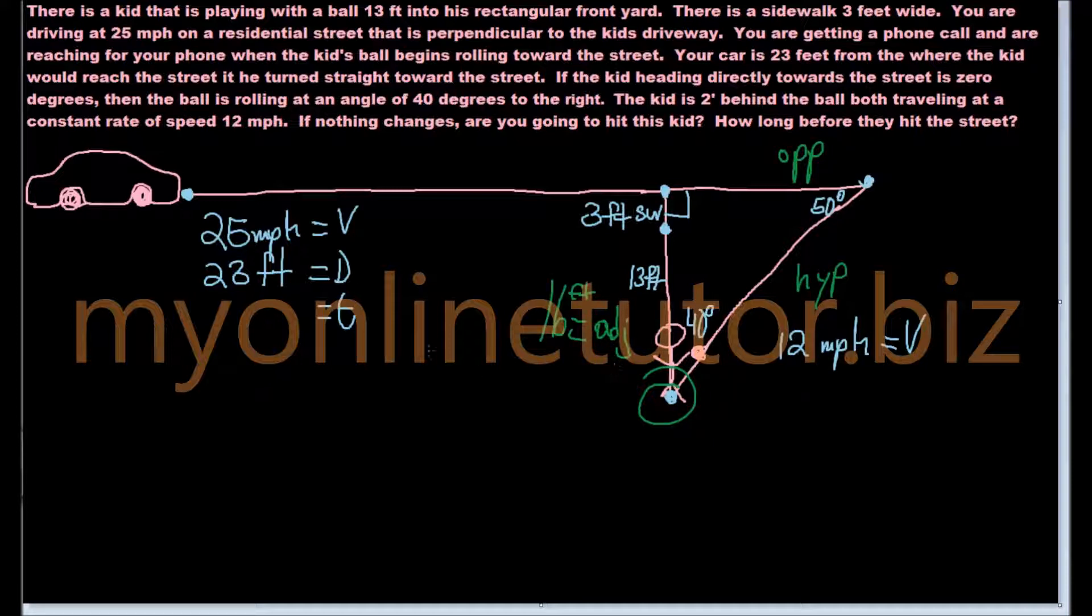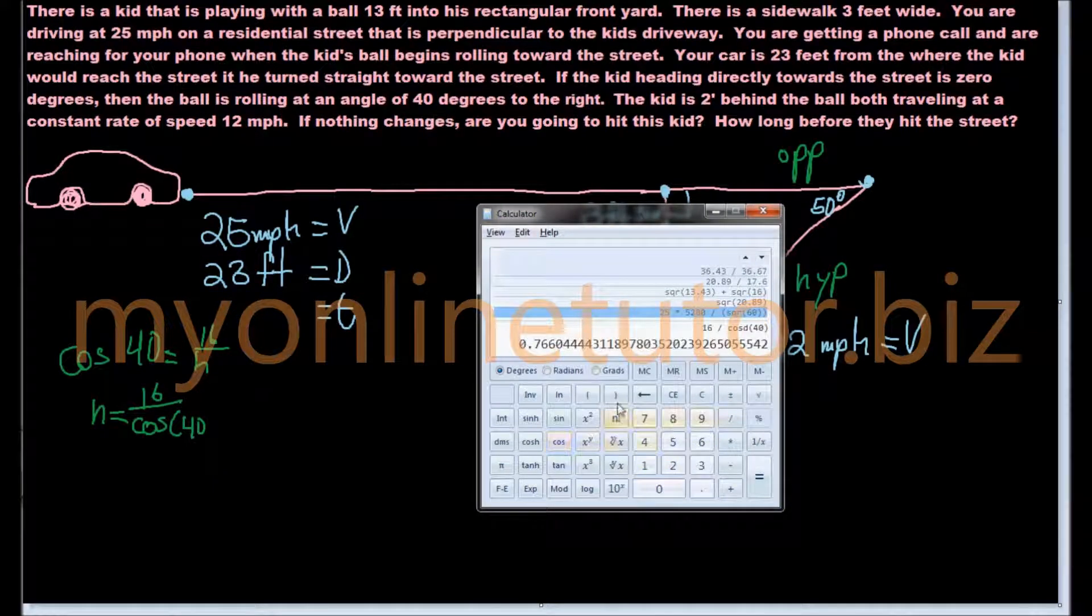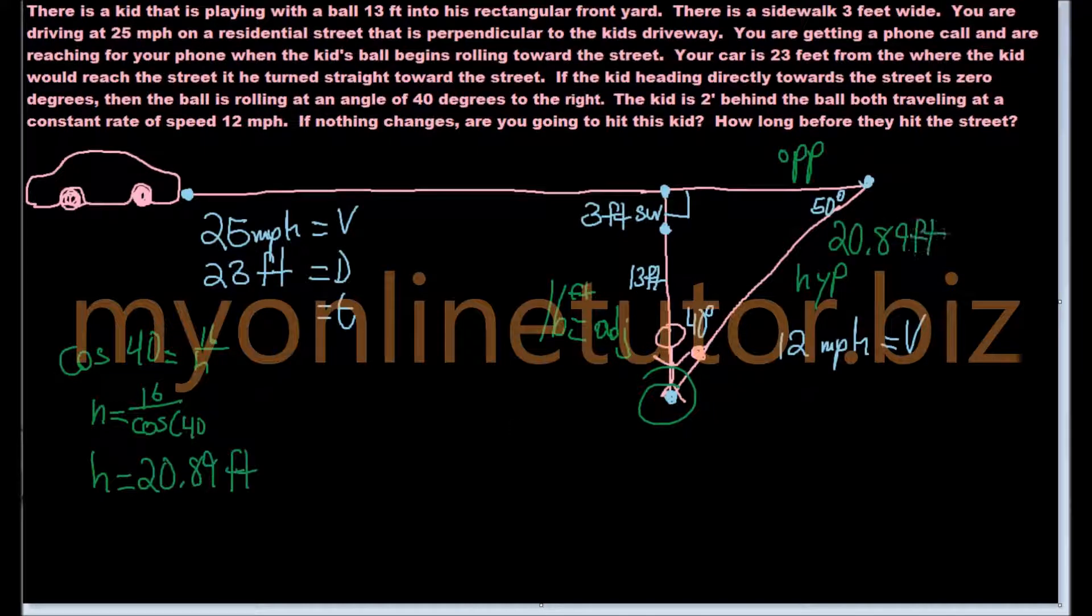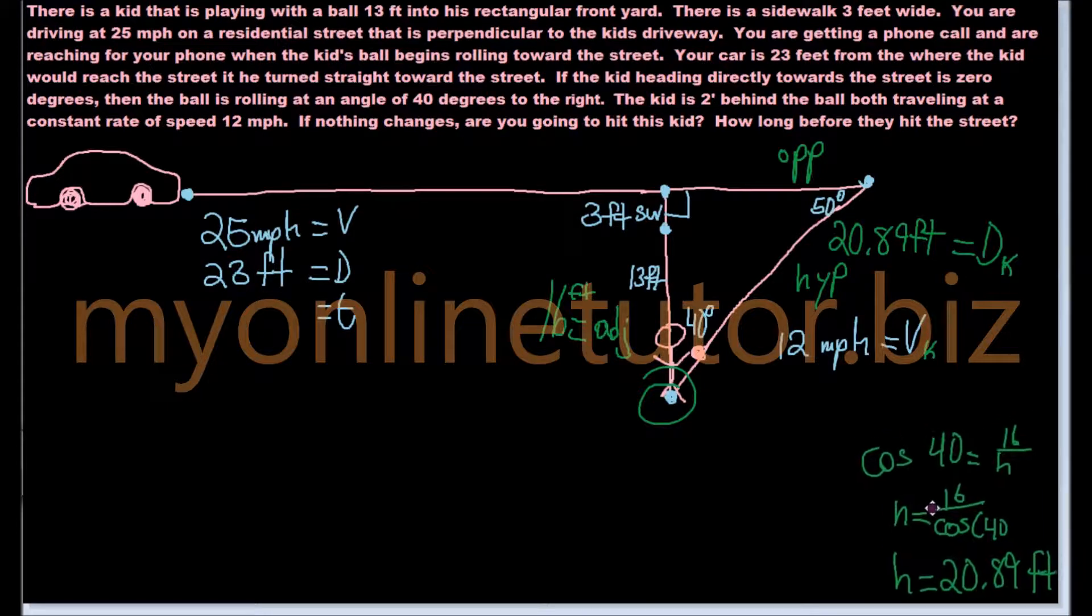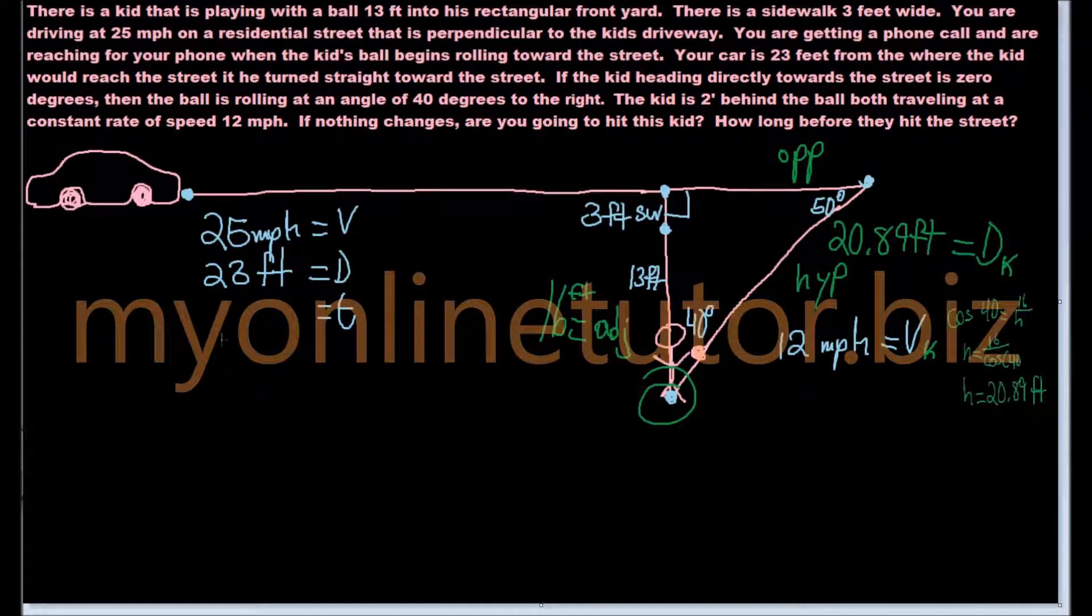Being that we do not have the hypotenuse or the opposite side measure, you cannot use sine. So let's use cosine first. Use the cosine of 40 degrees is equal to the adjacent, which is 16 over the hypotenuse. Once you do that, you should find out that your hypotenuse is 20.89 feet.